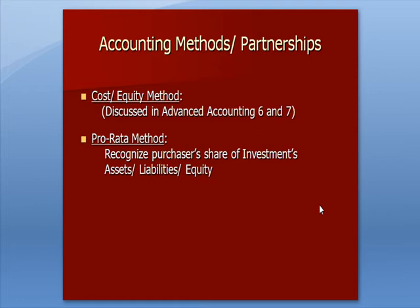We also have a new method called the pro-rata method, in which we recognize the pro-rata share of the investment's assets, liabilities, and equity. We'll see an example where an investor buys a 40% interest in a partnership. The pro-rata method says that 40% of the assets, the liabilities, and the equity gets reported on the purchaser's consolidated financials.